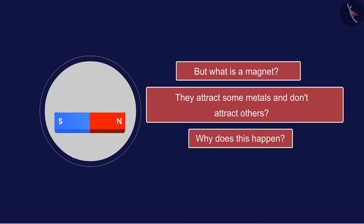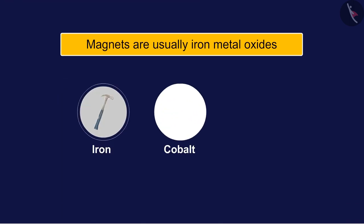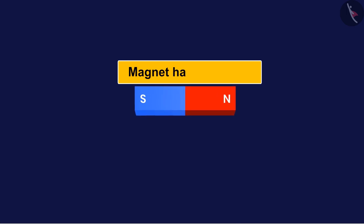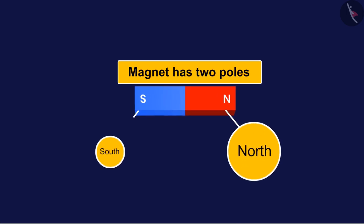In today's video, we'll answer some similar questions related to magnets. Magnets are usually iron metal oxides that attract certain metals such as iron, cobalt, and nickel. A magnet has two poles: the north and the south.